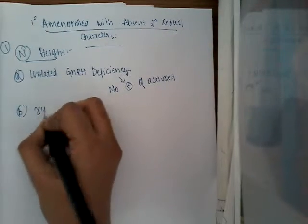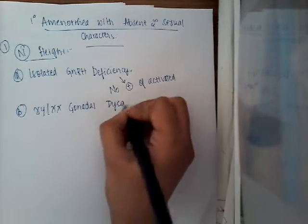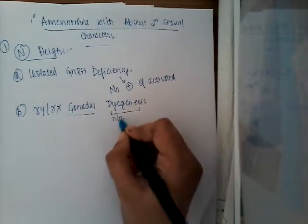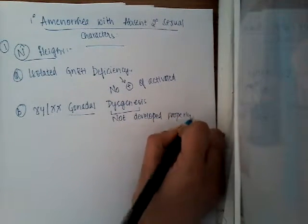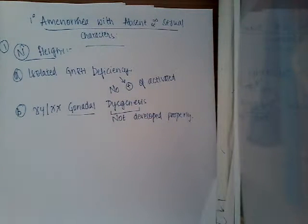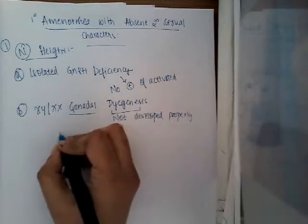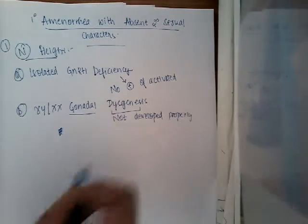The second type is XY or XX gonadal dysgenesis. The karyotype may be XY or XX, but the main problem is that the gonads are not developed properly — whether testis or ovary. As a result, there won't be any Wolffian duct structures if male, and Müllerian structures may be present if female, but the gonads are not formed properly and there will be no ovulation. FSH is increased here. Diagnosis is by phenotyping.